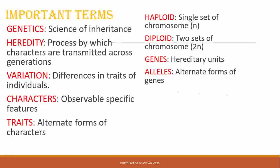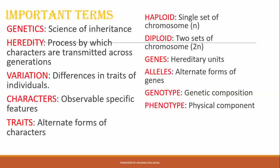Genotype is the genetic composition or genetic makeup of an individual for a particular character. Phenotype is the physical expression — for example, eye color is the phenotype, something observable. The genes and alleles responsible for that eye color form the genotype. Every phenotype will have a corresponding genotype, and every genotype will have a phenotype.